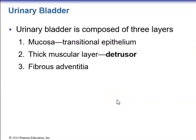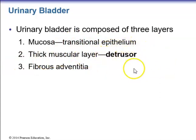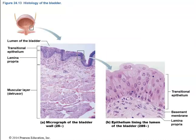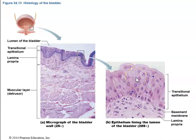The urinary bladder is composed of three layers: the inner mucosa of transitional epithelium, the thick middle detrusor muscle, and the outer fibrous adventitia. Histologically, the transitional epithelium appears dome-like in a relaxed state; when the bladder is full, these cells flatten and resemble squamous cells, but they are transitional epithelium.